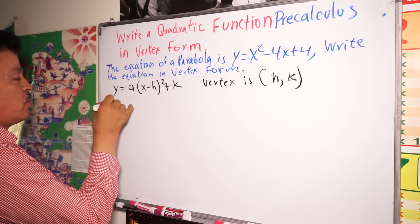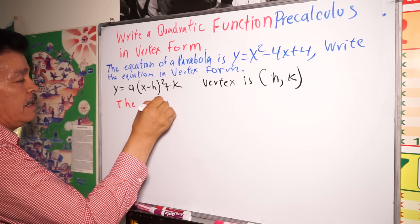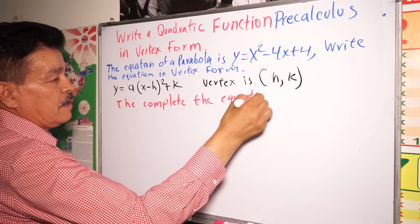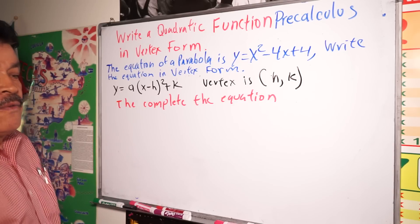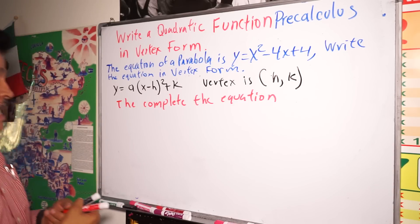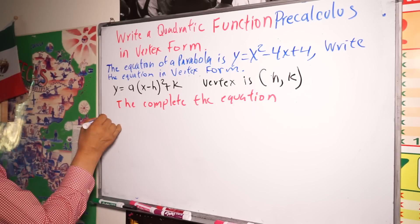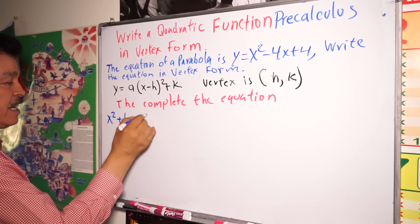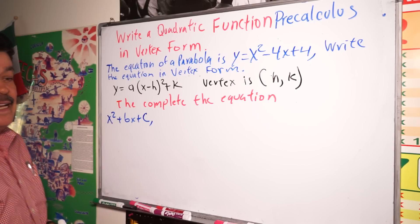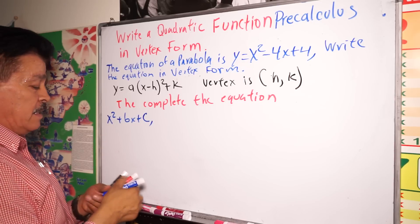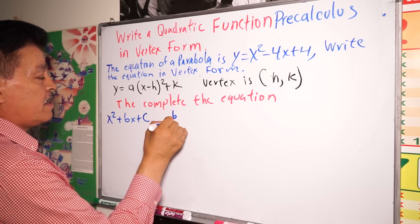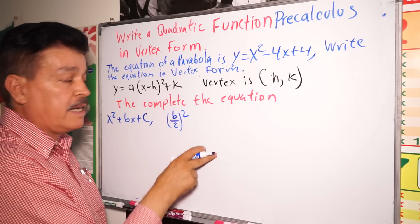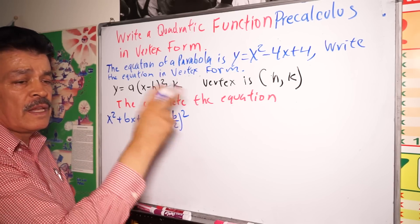It's completing the square — the complete the square method — for the quadratic formula. Like x to the second power plus bx plus c. You add or subtract (b/2) to the second power, then group the terms, and factor.